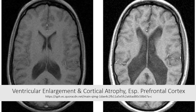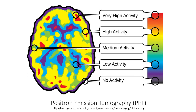In preparation to show you a few positron emission tomography images, I am providing this image to show what the different colors mean. Red and yellow indicate high activity, whereas blue, purple, and black indicate low to no activity.